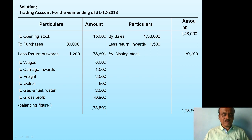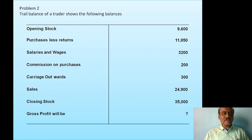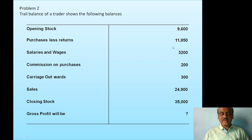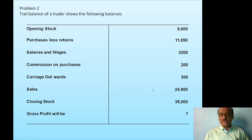Here is one problem for your homework. The trial balance of a trader shows the following balances: opening stock 9,600; purchases less purchase returns — purchase returns — then commission on purchase 200; carriage outwards 300; sales 24,900; closing stock 3,500.